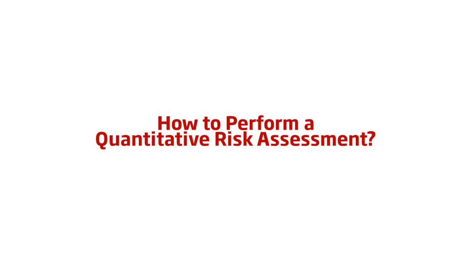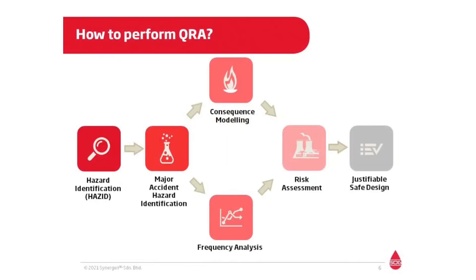Now let's talk about how a QRA is performed. Here is a flowchart of performing a QRA. Before any quantification of risk can be done, first of all we need to identify all potential hazards in a facility. This can be done as part of a workshop setting with the help of guide words. Given that in a facility there could be a number of potential hazards, making it impractical to quantify all of them, we need to identify the major accident hazards. Taking the example of a hydrocarbon facility, among the many hazards that are present, fire due to loss of containment of a vessel may be one of the major hazards.